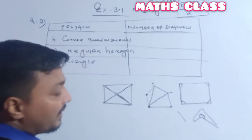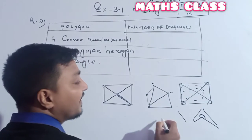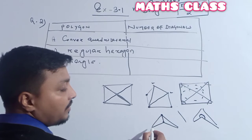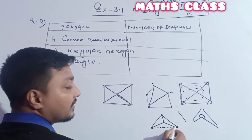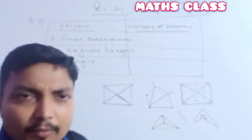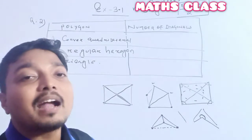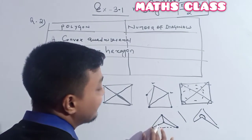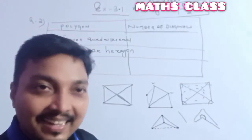Another important point: for a convex polygon, all diagonals lie in the interior region. But for a concave figure, when I draw a diagonal from a non-adjacent vertex, that diagonal lies outside the figure. A polygon is called a concave polygon if at least one of its diagonals lies in the exterior region — outside of the figure. So we cannot call such a figure a convex polygon or convex quadrilateral.